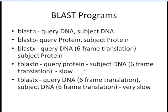Within BLAST, there are many different flavors. BLASTN allows us to take a DNA sequence and align it to another DNA sequence. BLASTP uses protein as both the query and subject. BLASTX takes a DNA query and does a six-frame translation of it, then goes against a protein database. TBLASTN uses a protein query against a DNA database with six-frame translation. Finally, TBLASTX does six-frame translation on both the query and subject DNA sequences, making it the slowest flavor of BLAST.